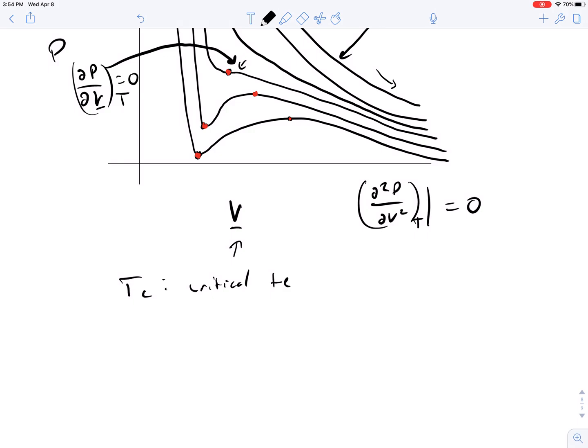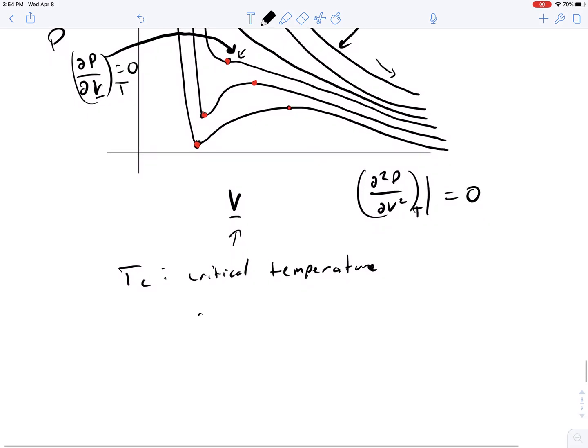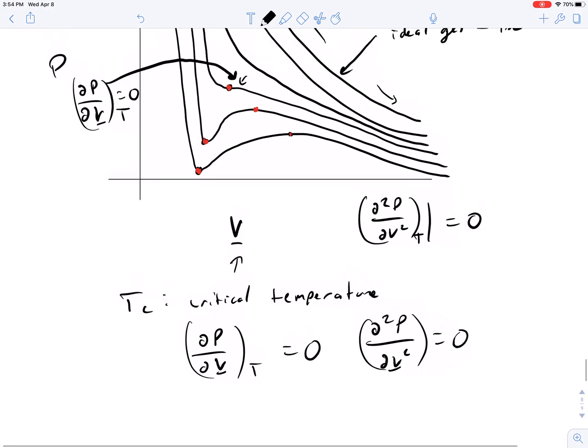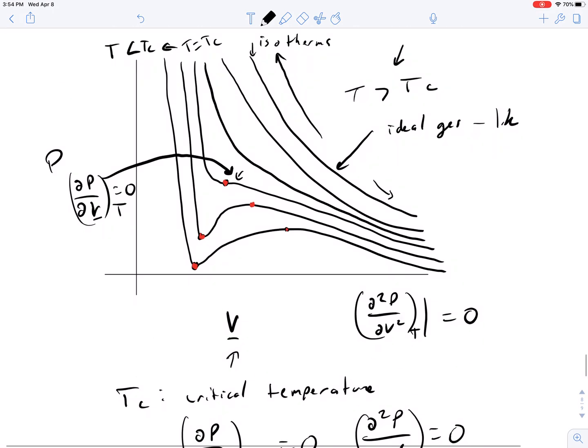And this is defined as the temperature where the first and second derivatives of pressure with respect to volume at constant temperature is equal to zero, as well as del squared pressure del v squared equals zero. That is, there's a region here where the inflection point and the maxima/minima converge all onto a single point.